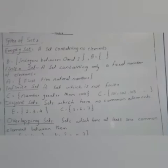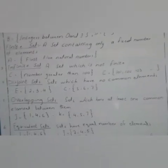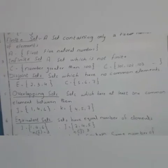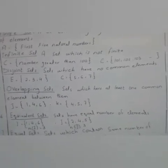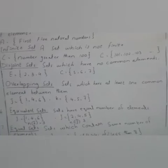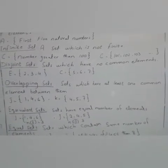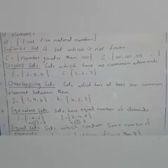Number 5, overlapping sets. Sets which have at least one common element between them. J is equal to 1, 4, 6 and K is equal to 4, 5, 7. In both sets, 4 is a common element. That's why J and K sets are overlapping sets.